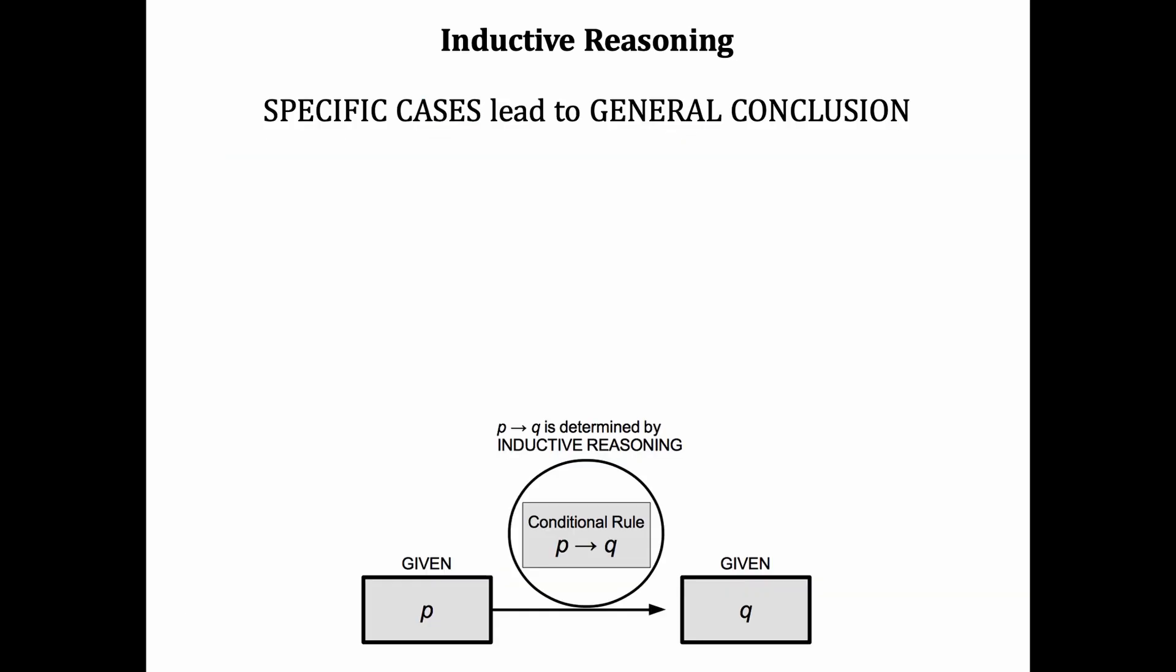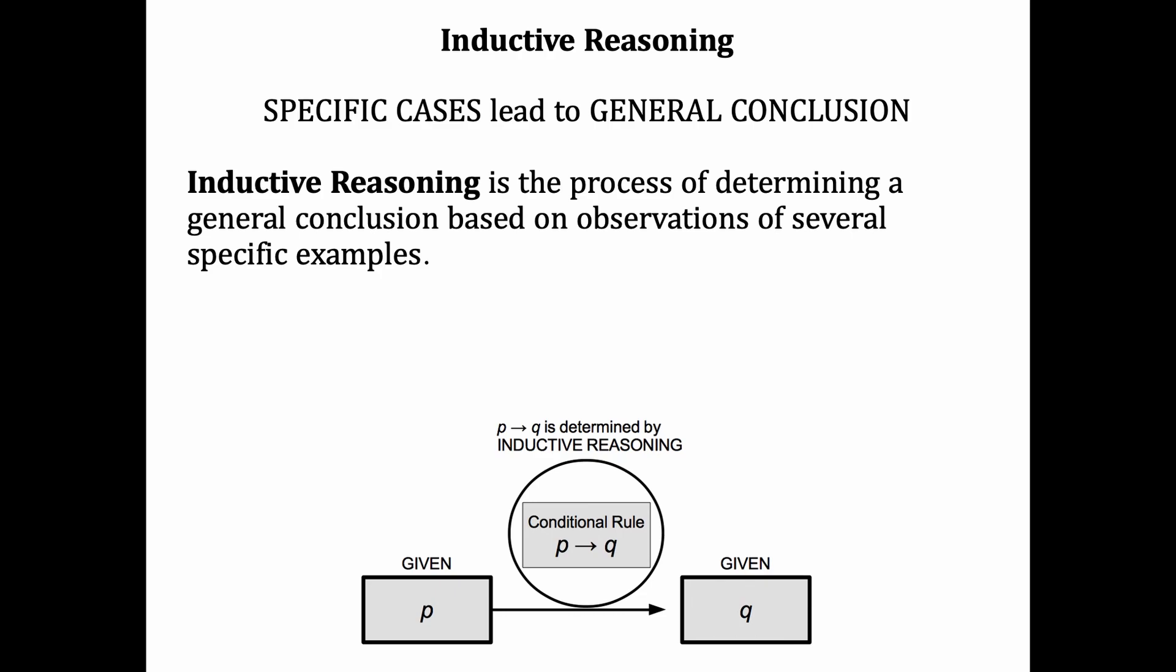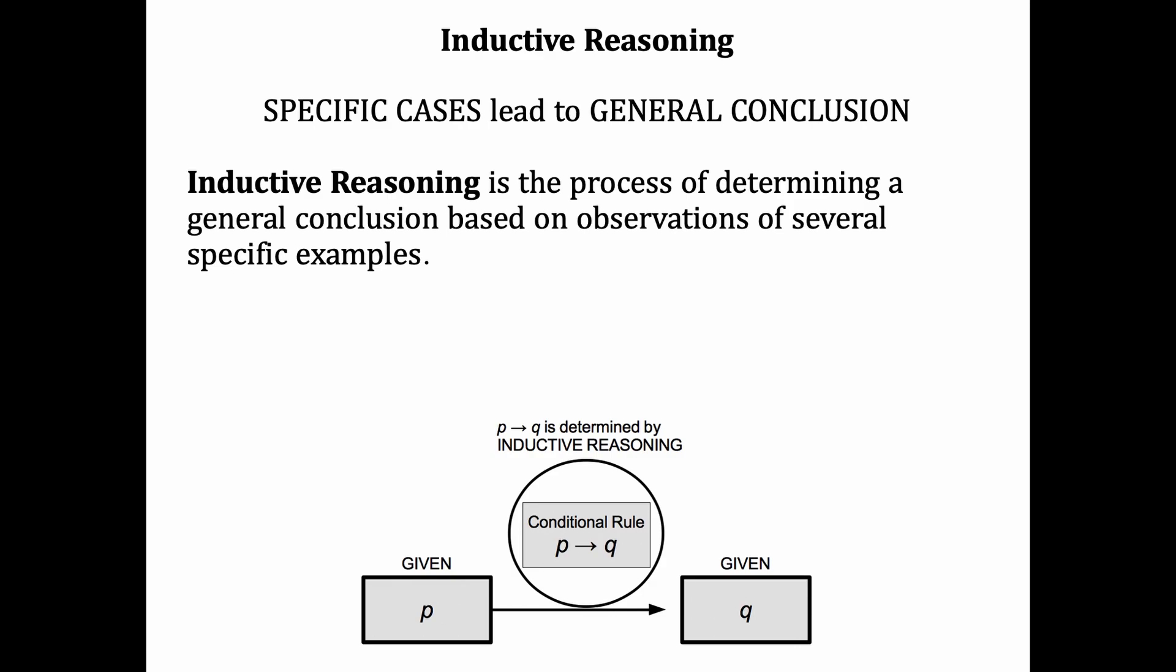The next type of reasoning is inductive reasoning. Inductive reasoning is the process of determining a general conclusion based on observations of several specific examples. Inductive reasoning is used when we observe a pattern, and from that pattern, predict a conclusion.